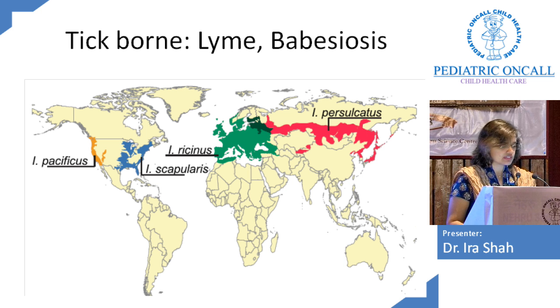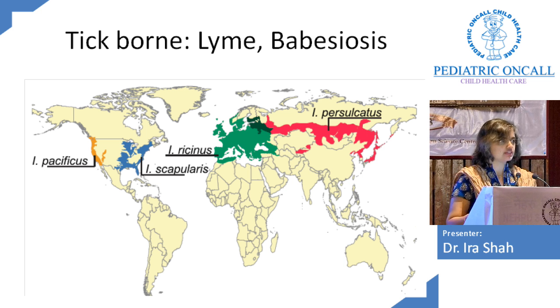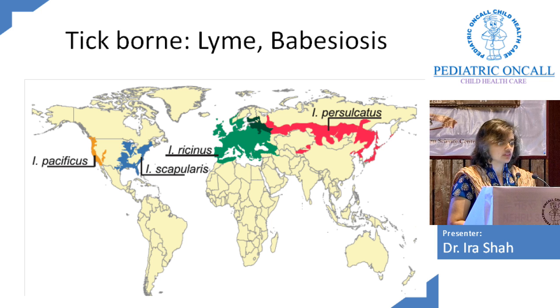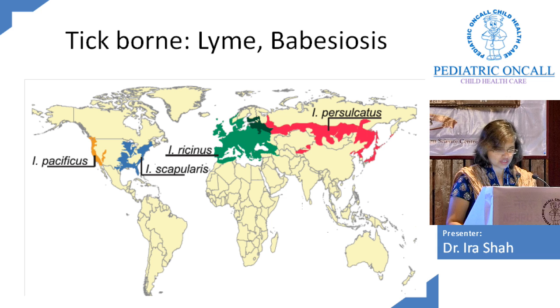So if you have a TB-like picture in a child who has gone to the Mississippi/Ohio region of the US, think of histoplasmosis. Lyme's disease is found in the temperate areas — the California region, Western Europe, and Eastern European wooded areas.